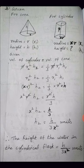A conical flask — that is, a flask in the shape of a cone — is filled with water. The radius of the conical flask is r units and height is h units. Then the water in the conical flask is put into a cylindrical flask whose radius is xr units.